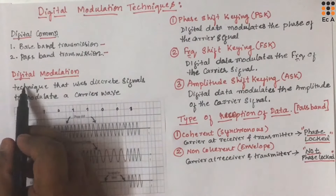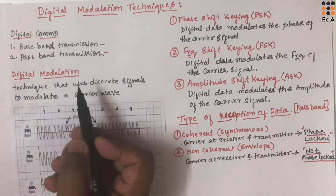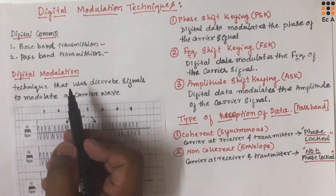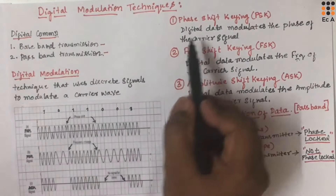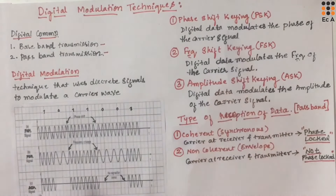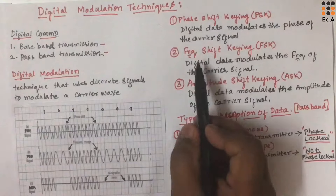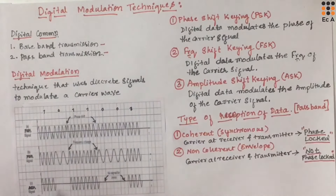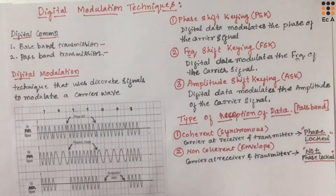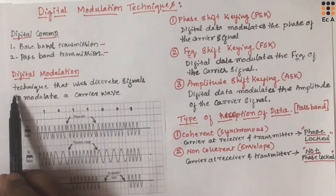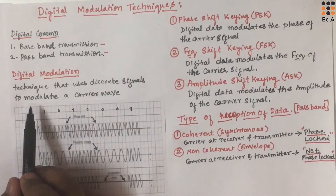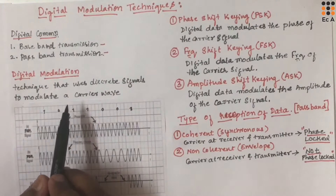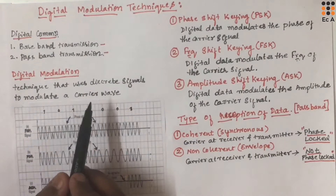Now, if we consider digital modulation, we can classify it into three basic types. First one is PSK, which is phase shift keying. Second one is FSK, which is frequency shift keying. And third one is ASK, which is amplitude shift keying. Digital modulation is a technique that uses a discrete signal to modulate a carrier wave.